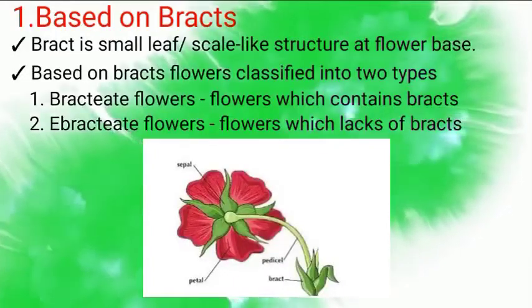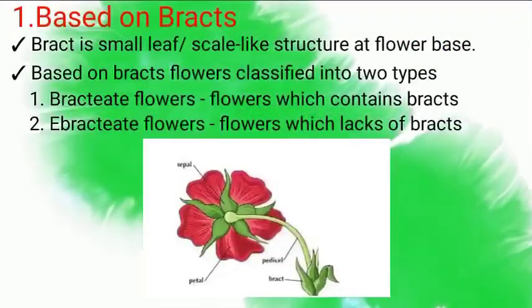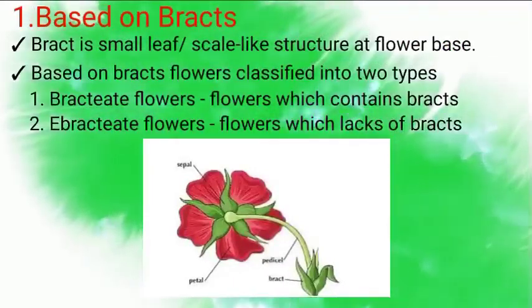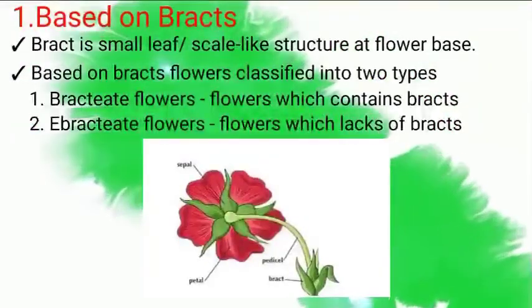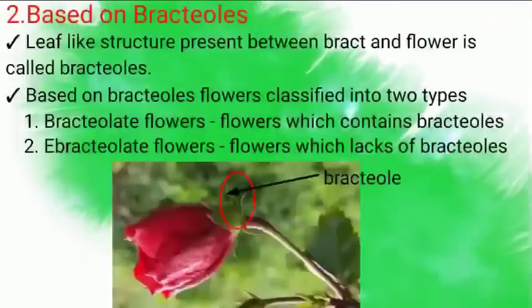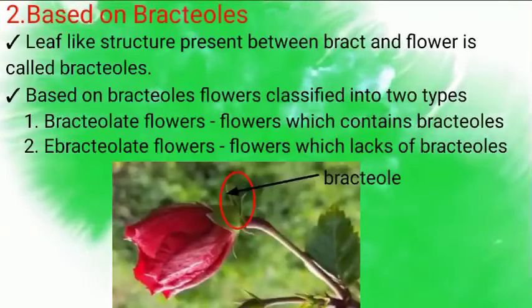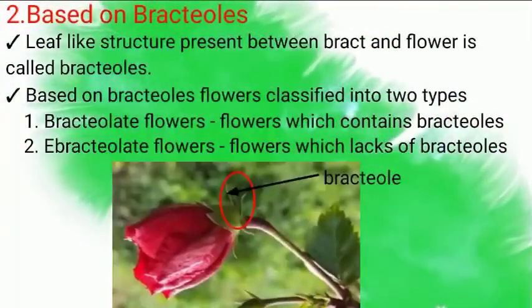Let's see in the picture also — the leaf-like structures present at the base of the flower are called Bracts. The second aspect of classification is based on Bracteoles.